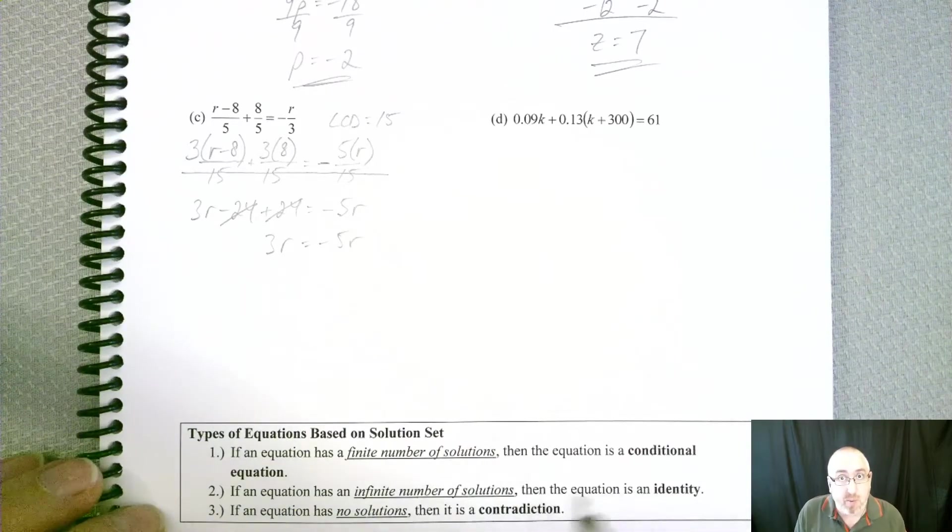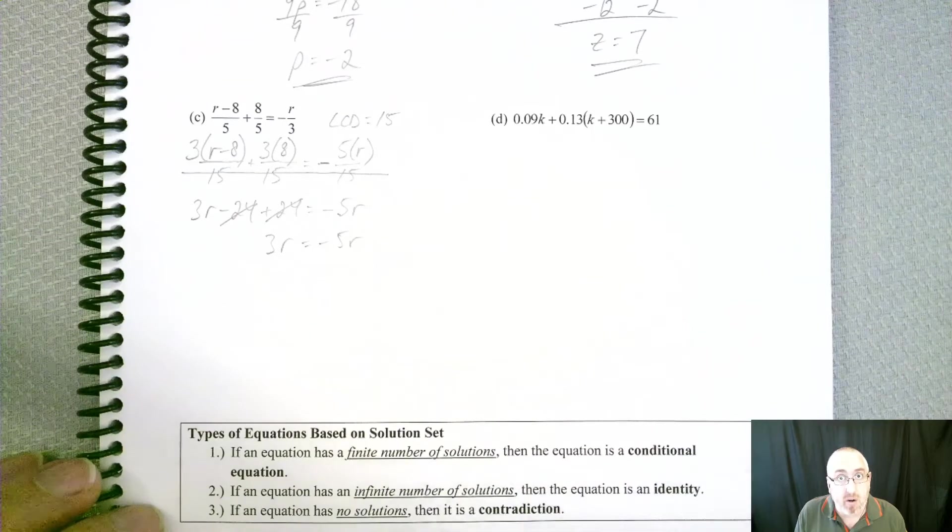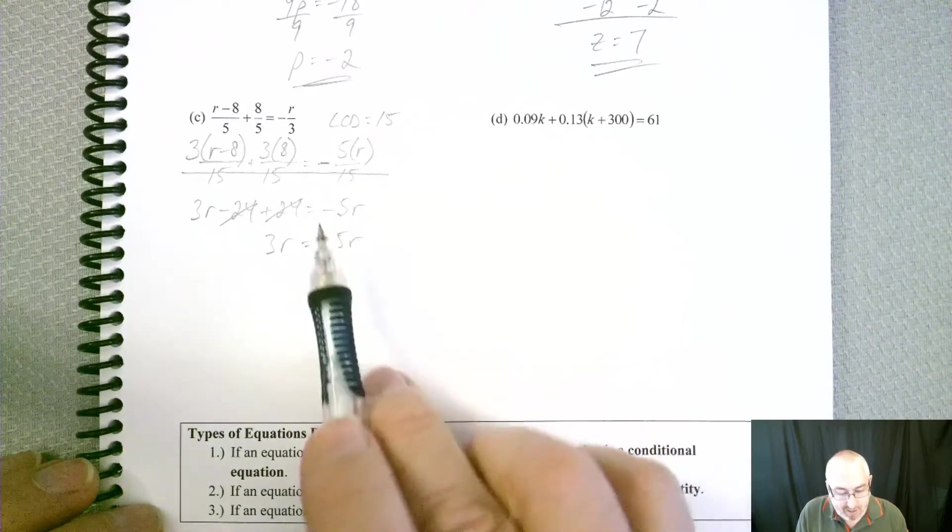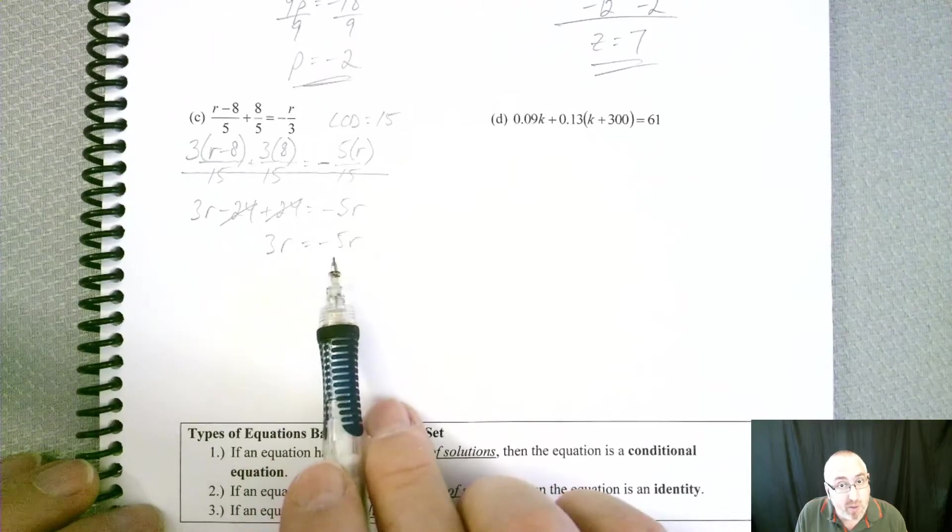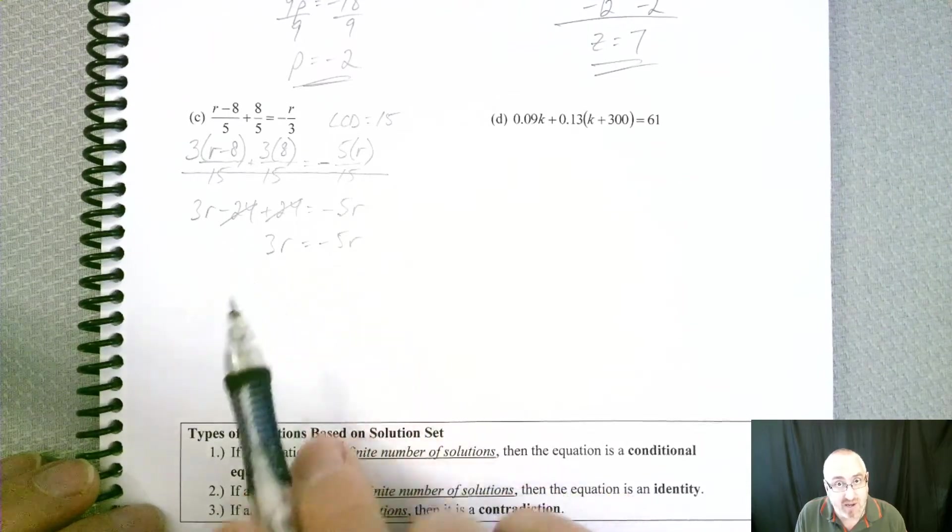Well, remember, we said to move the smaller of the two. Now, technically, a negative number is smaller than a positive one. So really, we want to move this minus 5R to the other side.